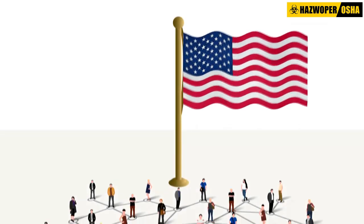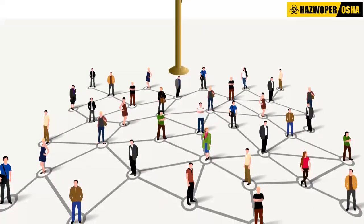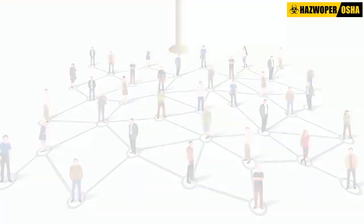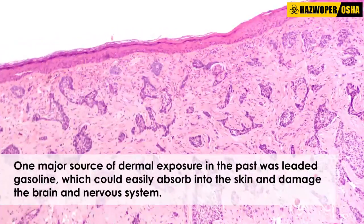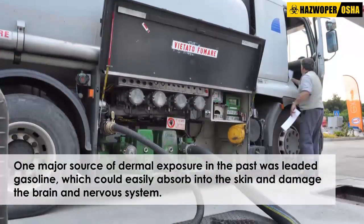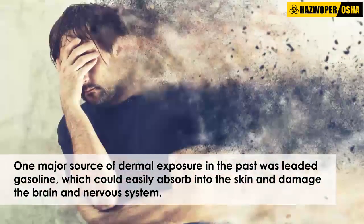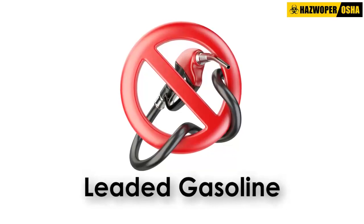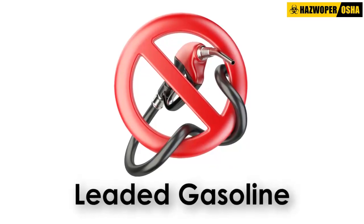In the United States, the general population is not likely to encounter forms of lead that can be absorbed through the skin. One major source of dermal exposure in the past was leaded gasoline, which could easily absorb into the skin and damage the brain and nervous system. However, now that leaded gasoline is banned, this threat no longer exists for most people.